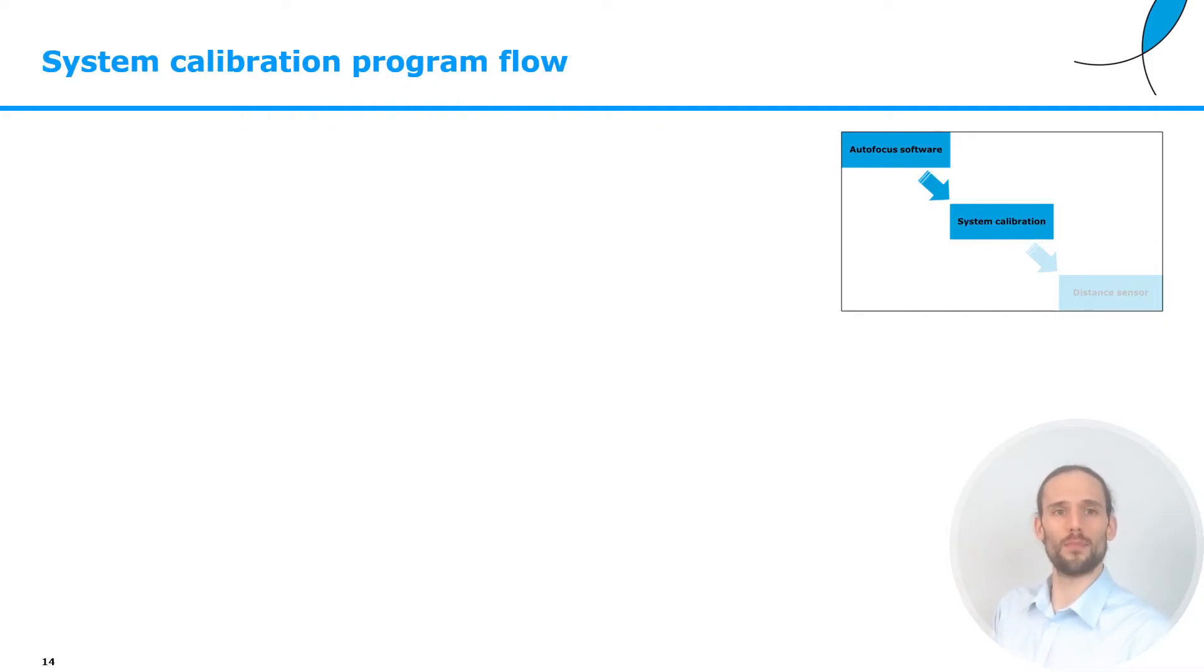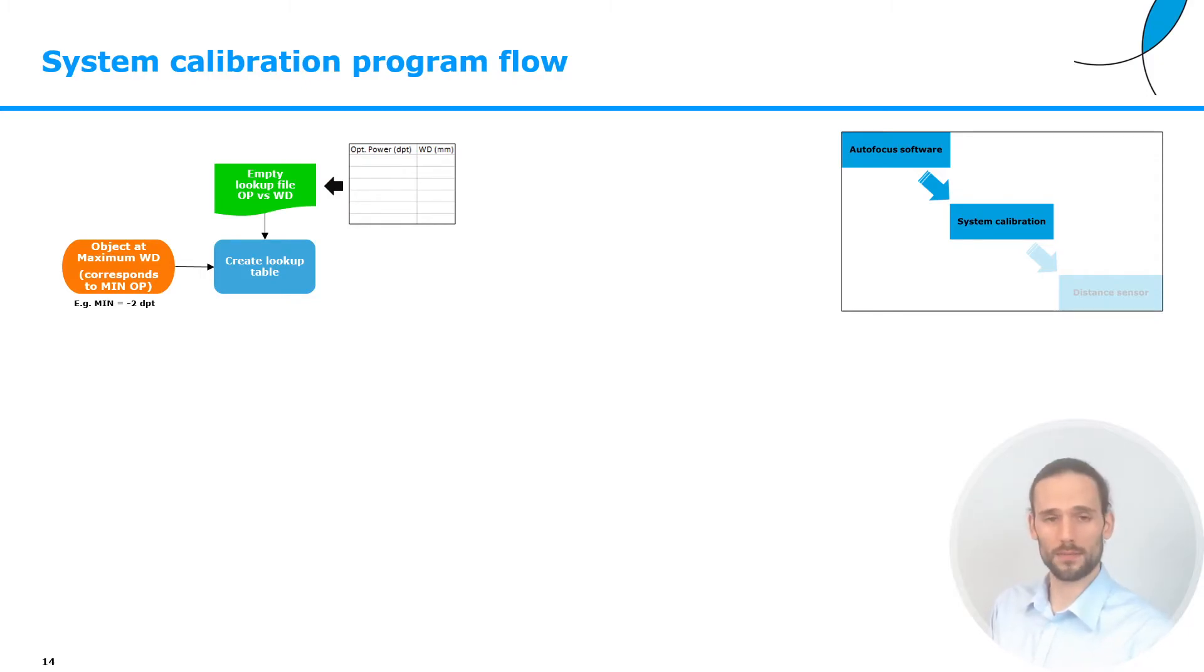Now that we have programmed our autofocus, we need to calibrate our system. What we're going to do now is put the object at the maximum working distance, which also corresponds to the minimum optical power. For example, it could be minus two diopters. Now we will create an empty lookup table of the form optical powers versus working distance. We will measure the distance at which the object is by some external means, and we will provide this distance to the program. At this point, we can either perform the autofocus, or we can also set manually the optical power to have the object in focus. Of course, these two actions are equivalent. Now we will save this point, optical power versus working distance, in our lookup table.